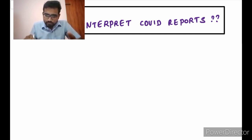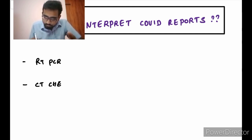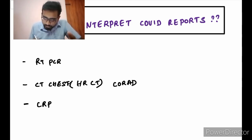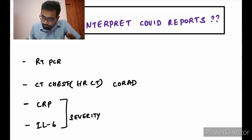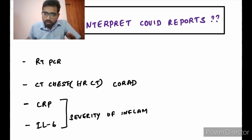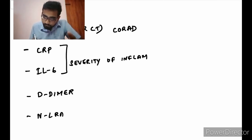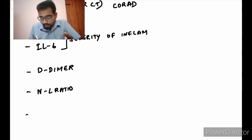If you look at the list of things, first we have the gold standard RT-PCR, and then CT chest — to be specific HRCT, high resolution computed tomography — where you are also going to see the CO-RADS scores, and then C-reactive proteins and interleukin-6 to detect the severity of inflammation, and in addition to that D-dimers, the neutrophil to lymphocyte ratio, and the antibody test.